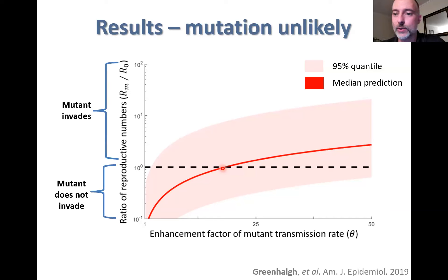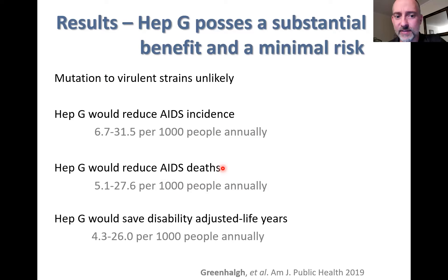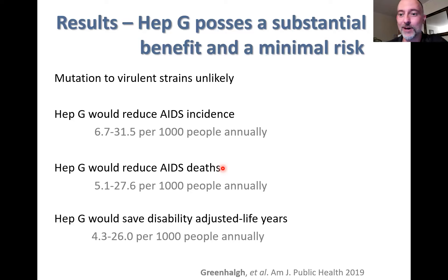If this ratio of reproductive numbers is above one, the mutant can invade; if below one, it's unlikely to invade. To summarize: if we were to scale up hepatitis G so it's 12.5 to 25% more prevalent, we can actually save a substantial proportion of AIDS incidences—6.7 to 31.5 per 1,000 people—and prevent a similar number of deaths, essentially giving people two years of delayed progression. This illustrates how compartmental models can inform both health policy and disease evolution without going into too many walls of equations.